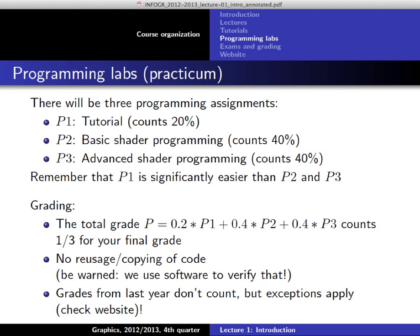Programming assignment grading: three assignments. The first is just a tutorial, so it counts only 20% of your programming grade. The other two each count 40%. The total programming grade counts one third of your final grade. Reusing code is not allowed. For students who did the course last year, we're considering allowing some to keep their programming grade from last year rather than redoing it — but that will be decided individually. Check the website if you think this applies to you.